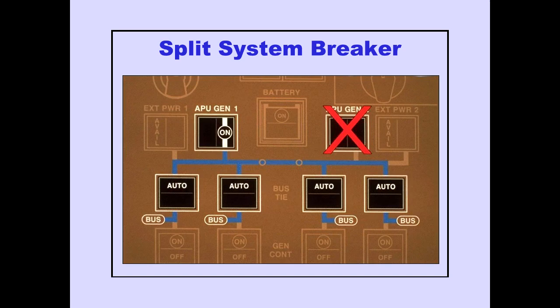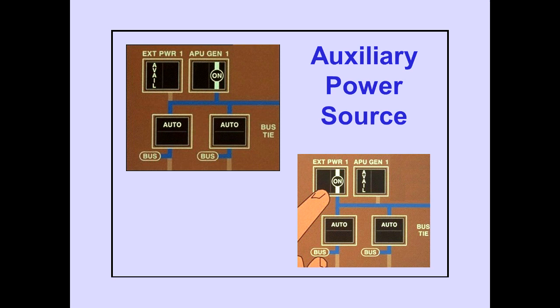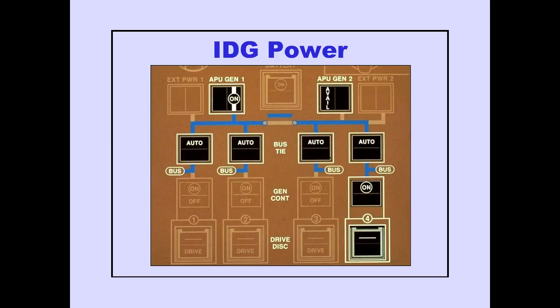If one of the APU generators or external power sources is disconnected or fails, the split system breaker closes automatically, maintaining AC power to the synchronous bus. Only one available auxiliary power source can be selected to power the same side of the synchronous bus; the last power source selected automatically disconnects the other. When IDG power is available, the APU generator or external power source automatically disconnects.